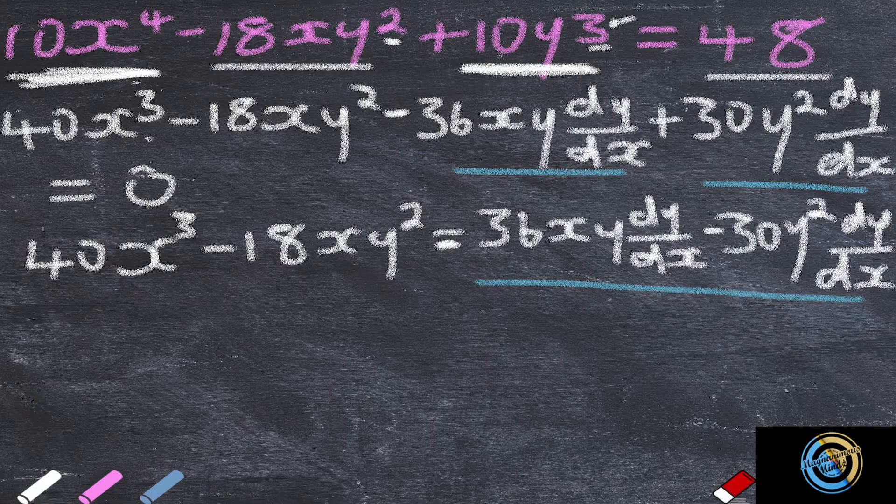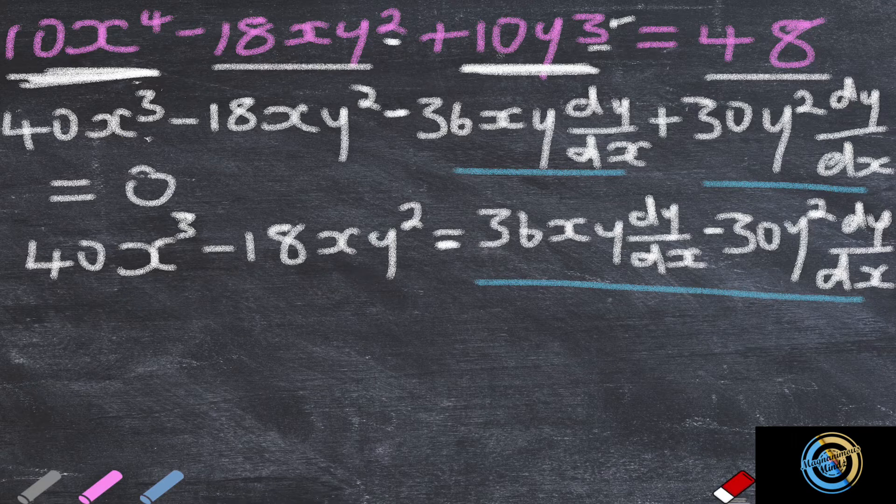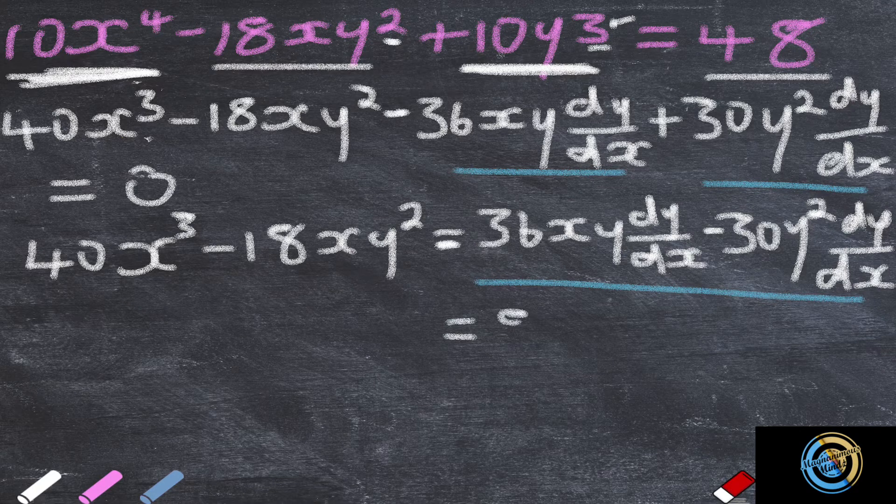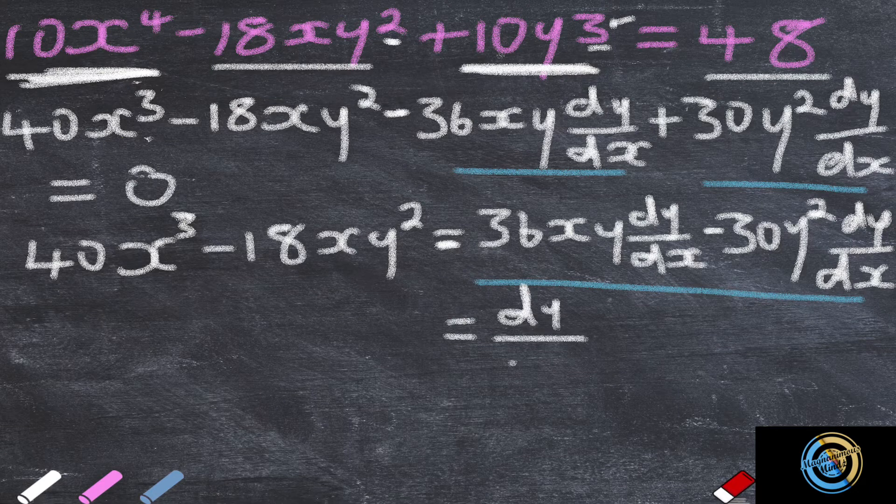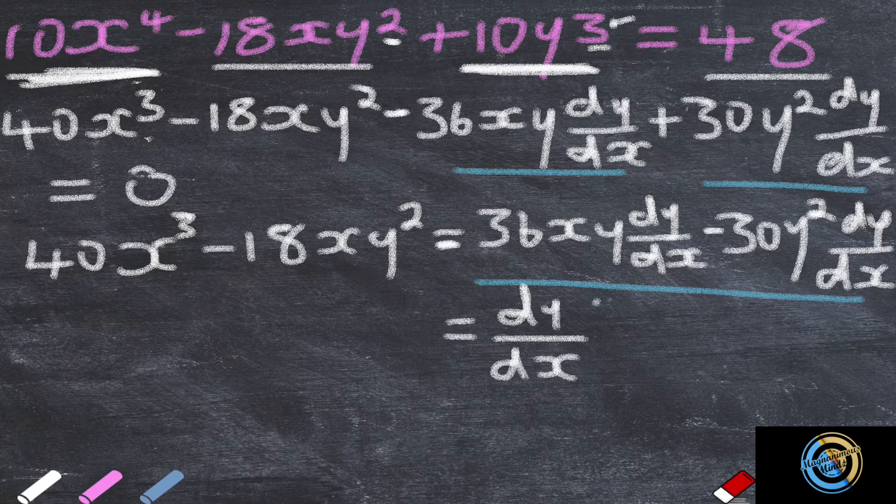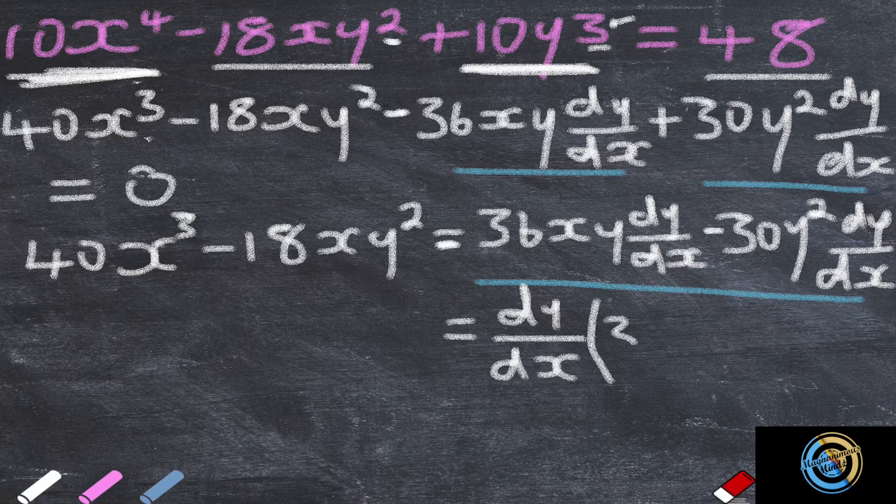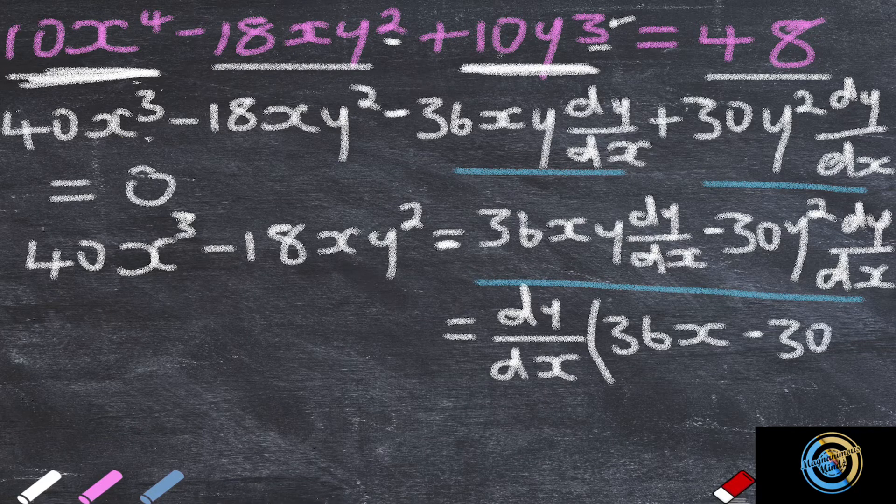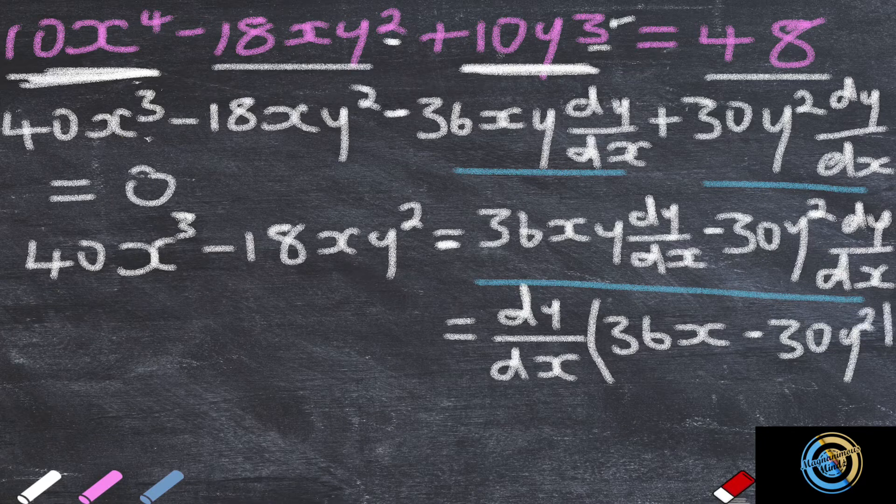So this side will be left with dy over dx times 36x minus 30y squared. This side is still 40x cubed minus 18xy squared.